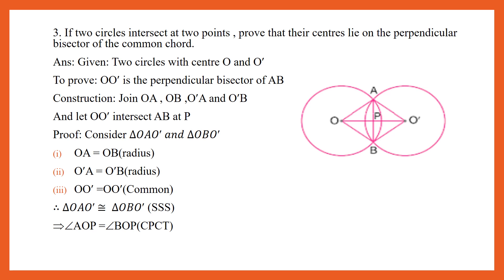Question number 3: If two circles intersect at two points, prove that their centers lie on the perpendicular bisector of the common chord. We take two circles, one with center O and the second with center O', having two points in common, A and B. We join points A and B, so AB is the common chord of both circles. We need to prove that centers O and O' lie on the perpendicular bisector of AB. We are given two circles with centers O and O', and we need to prove OO' is the perpendicular bisector of AB.